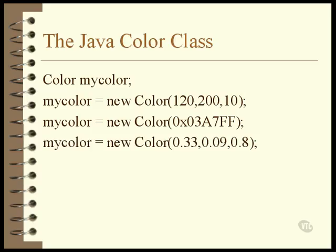The three RGB values can also be expressed as relative intensities in the form of floating point numbers between the range of 0 and 1. The decimal value of 1 is the same as the integer value of 255. Half intensity for a primary color would be 0.5.